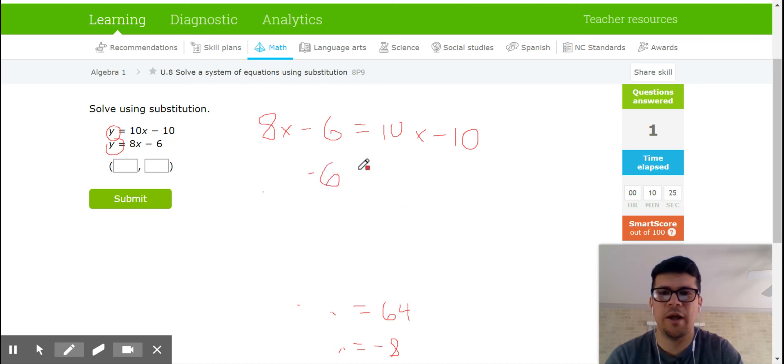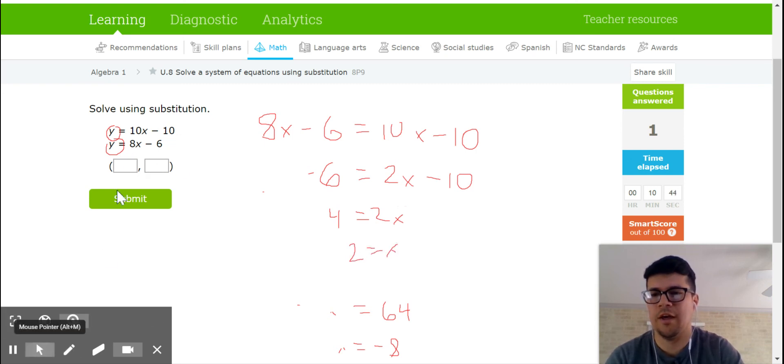I can subtract 8x. So negative 6 equals 2x minus 10. I can add 10 to both sides and I'll be left with 4 equals 2x. In other words, x has to be equal to 2. And so I've got that.